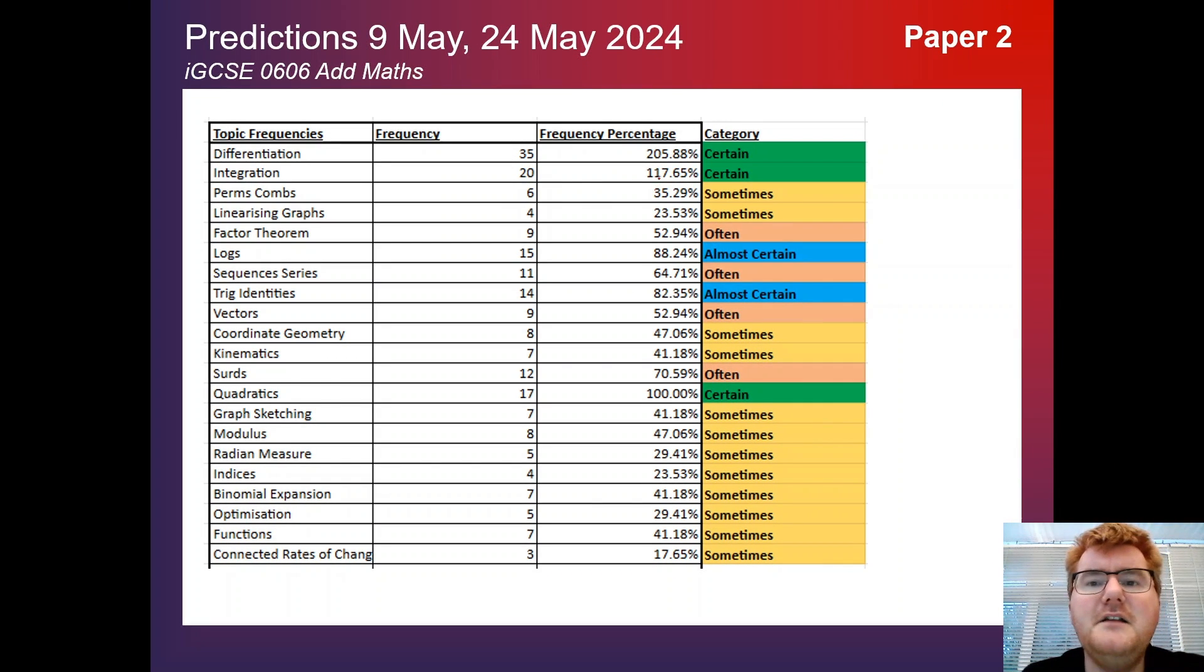So here are the Paper 2 frequencies. You can see these two top topics are the most important. They do come up the most. But don't forget your surds knowledge. That creeps into a lot of different questions. Vectors still at 53% here as well. Could have mentioned that as part of the prediction video. Just be aware you've still got things like the modulus function coming up almost 50% of the time. Binomial expansion, we haven't talked about much in this video, but comes up over the two papers 80% of the time. So you do need to make sure you revise that.